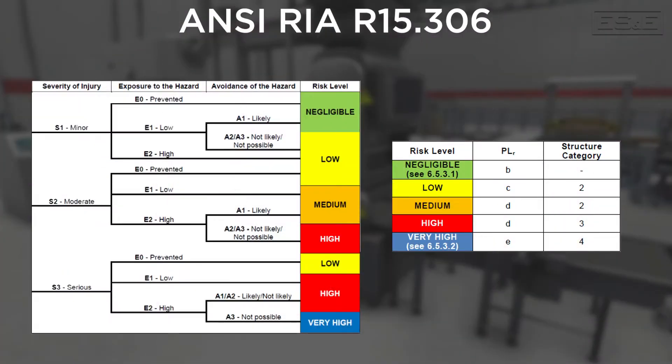It was determined that it is difficult to identify the risk level when the assessment is done by multiple facets within a company, such as engineering, maintenance, and operations. Using the RIA 15.306 method, it makes it more decisive by defining each criteria well and breaking down the conditions.